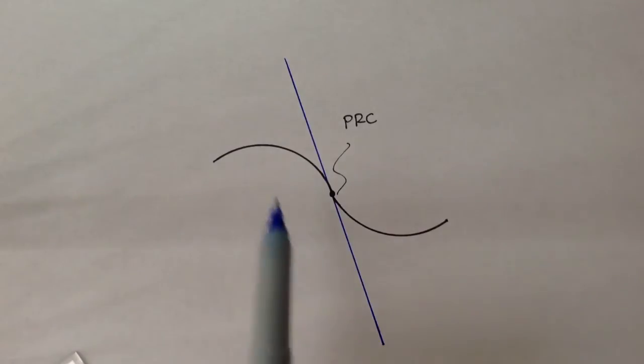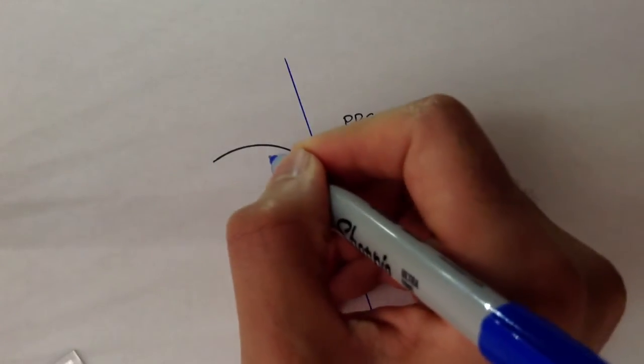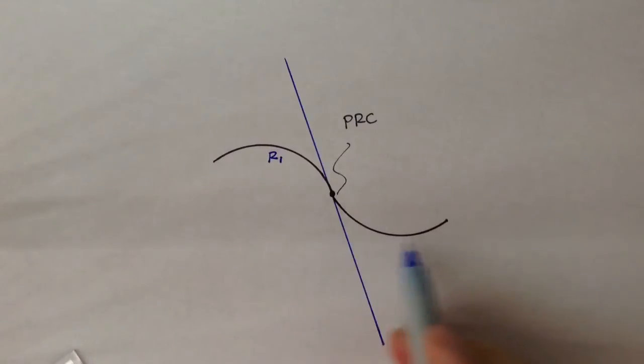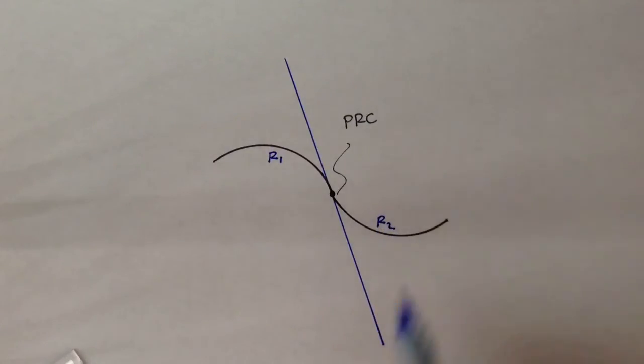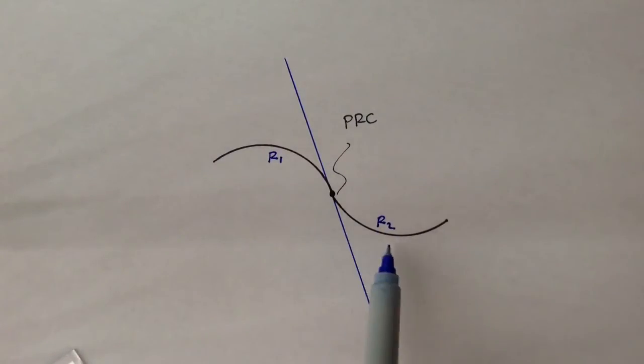Now, if I said this is curve 1, and it has radius 1, and this is curve 2, and this has a radius 2, and remember, these radii can be the same value or a different value.